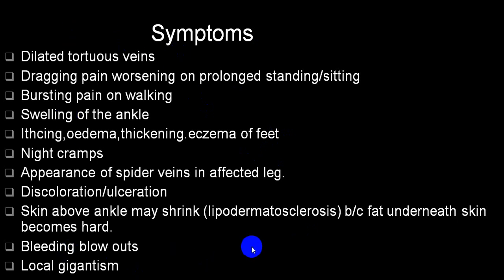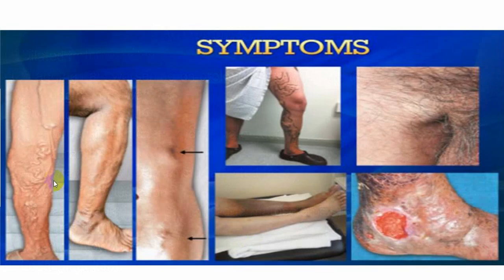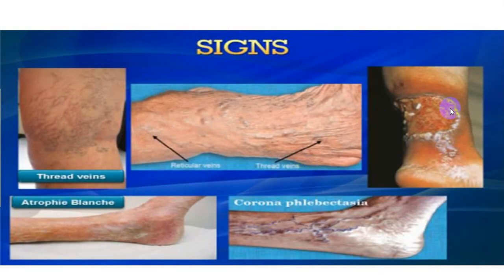On examination: be polite, obtain consent, expose and position the patient, look for pain. Wash hands before and after. On inspection, look for varicose vein distribution, ulcer, eczema, star veins, lipodermatosclerosis, atrophic blanche, pitting edema, and any scars. Examine the skin for eczema, pigmentation, venous ulcer, and lipodermatosclerosis. Look for pitting edema, atrophic blanche, and active or healed ulceration.